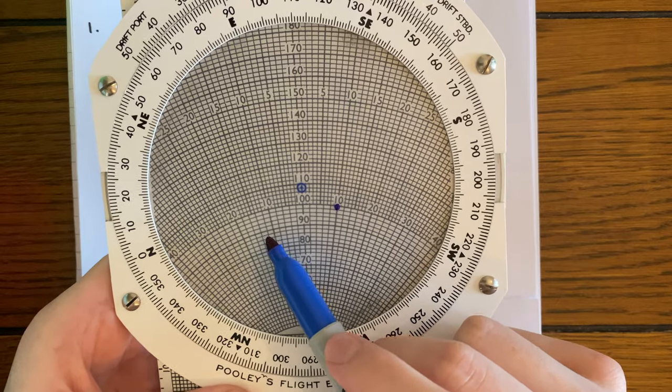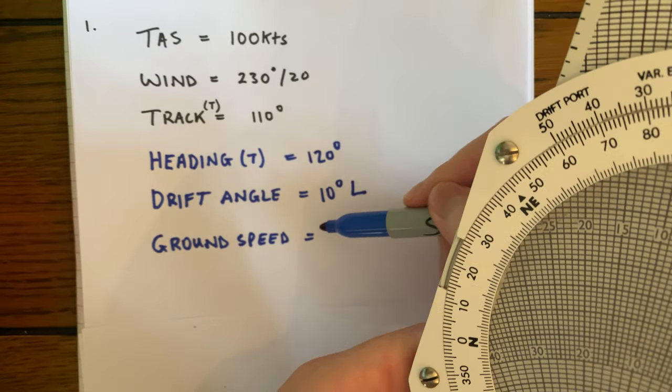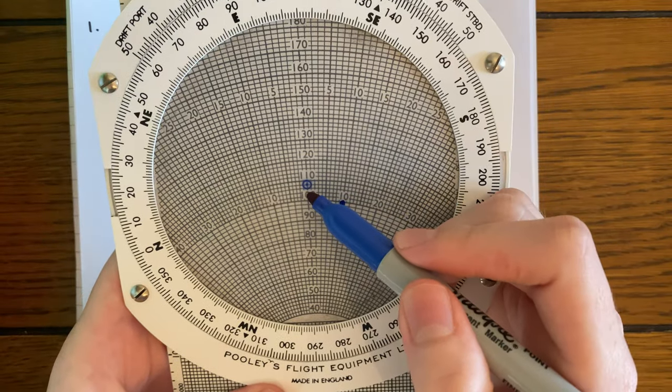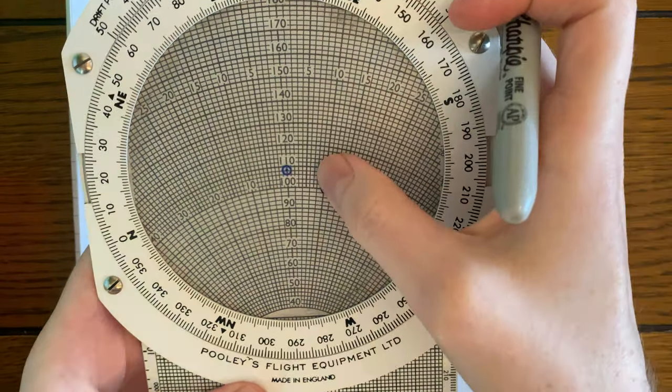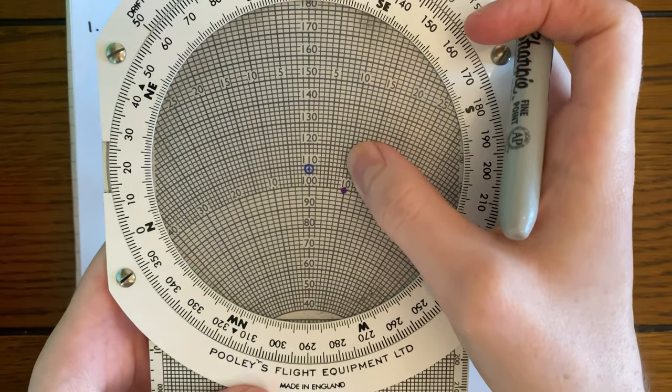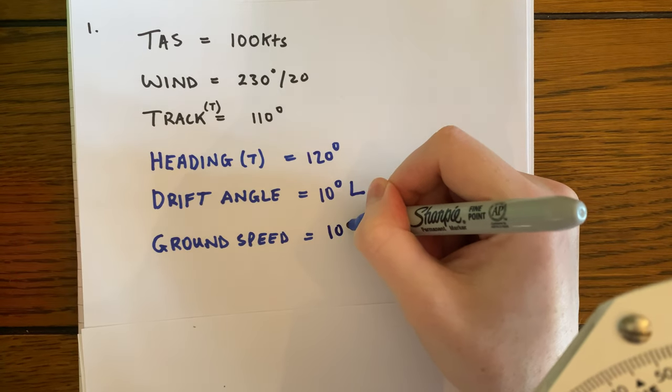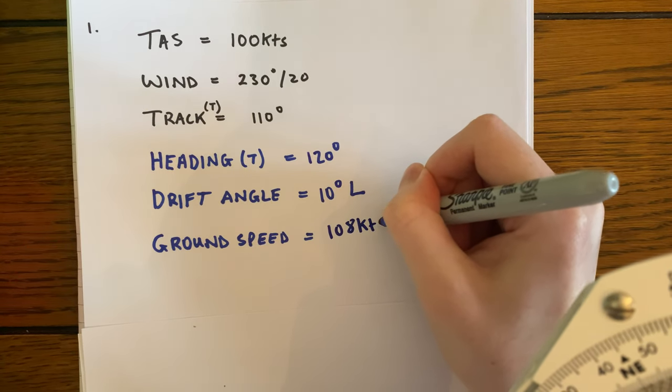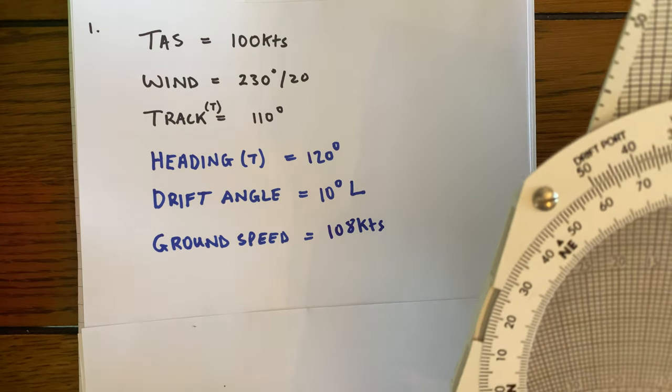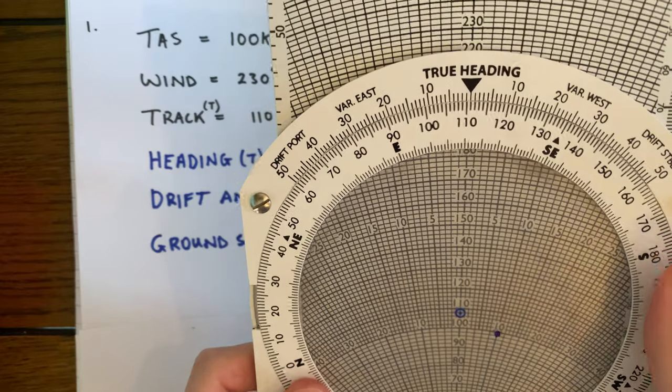And our ground speed, then—the final part is really just simply reading what our center point now says. And we can see there that is pretty close to 108 knots. So that is our ground speed. So it's a pretty quick method, and I think a lot quicker than other methods that are taught.